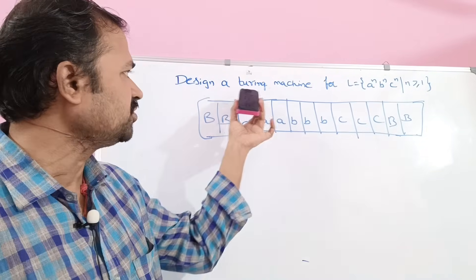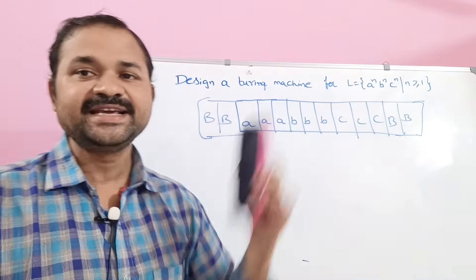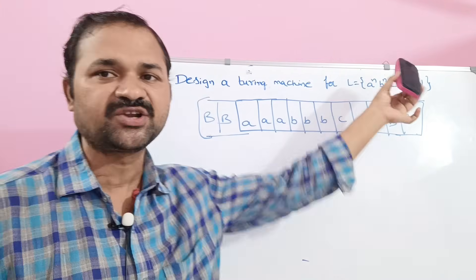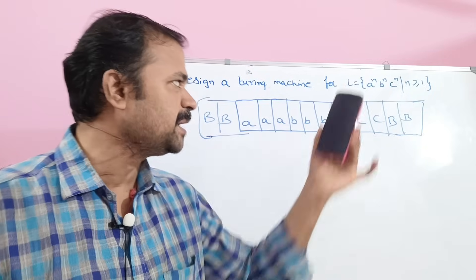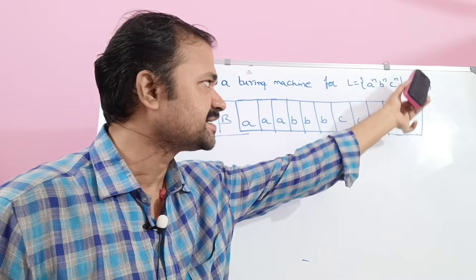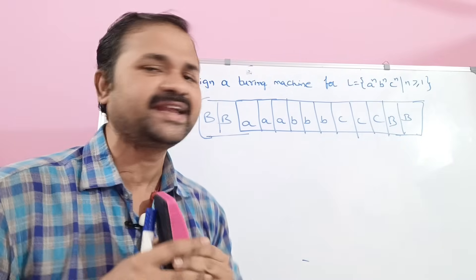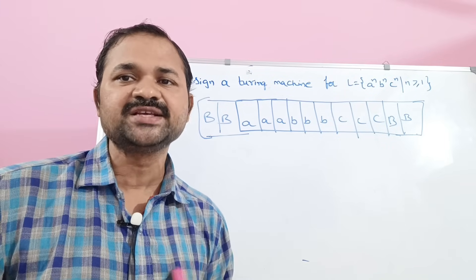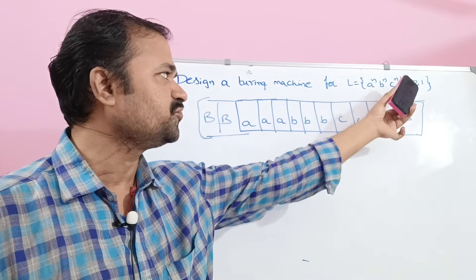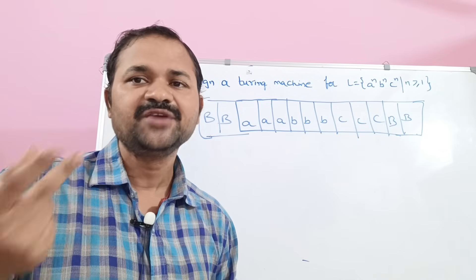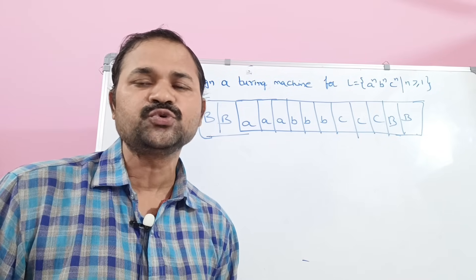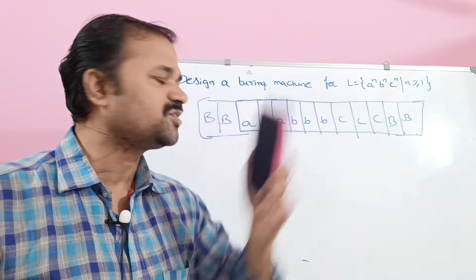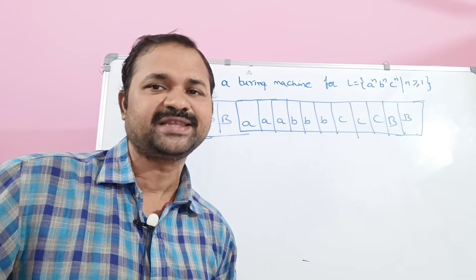Let's see this example: Design a Turing machine for L = {a^n b^n c^n | n ≥ 1}. The possible strings are: if N=1 then ABC, if N=2 then AABBCC, if N=3 then AAABBBCCC, and so on.